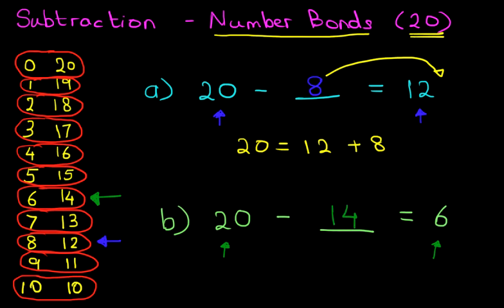So we can write that down. 20 minus 14 equals 6. That is the same as if we wrote down 20 equals 6 plus 14. So that is the answer.